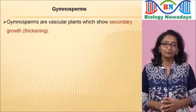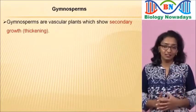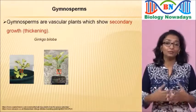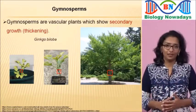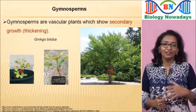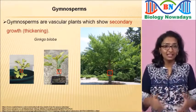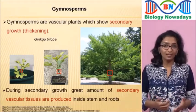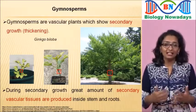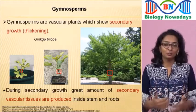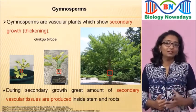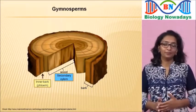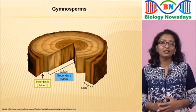Gymnosperms are vascular plants which show secondary growth or thickening. This means that the stem and roots of gymnosperms will increase in diameter greatly after a short period of growth. During secondary growth, a great amount of secondary vascular tissues — secondary xylem and secondary phloem — start to form, increasing the diameter of the stem and roots. Secondary xylem is basically the wood, and phloem is the inner bark.